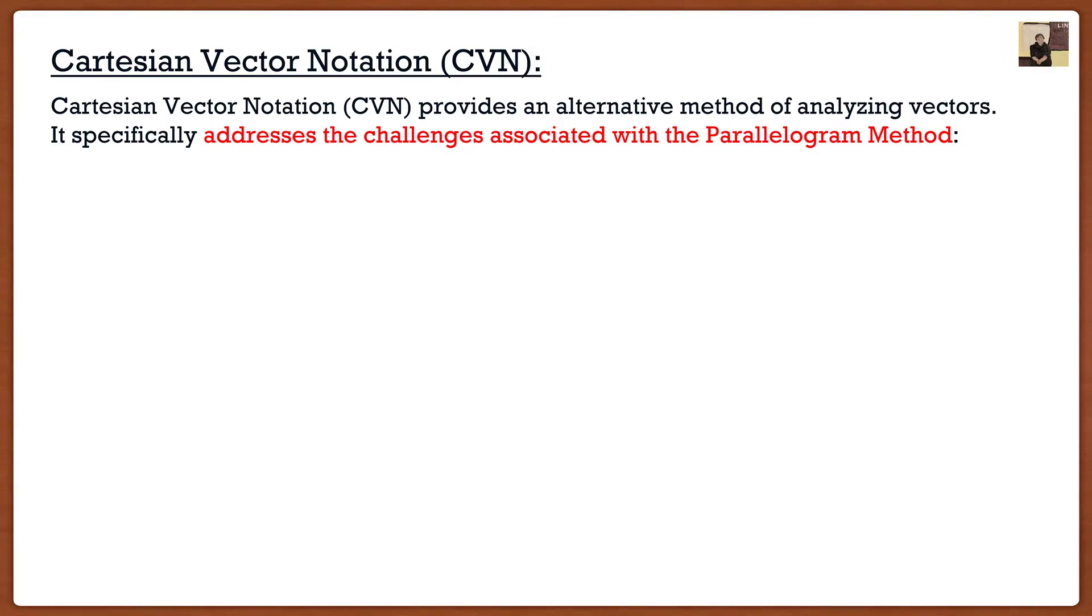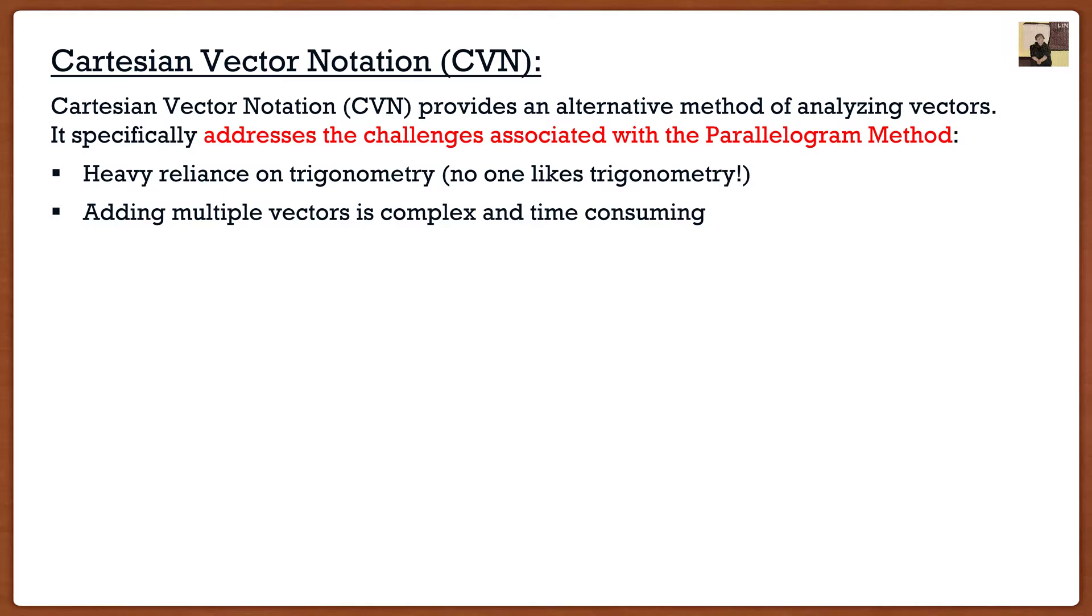Cartesian vector notation, or as a lot of people call it CVN, provides us with an alternative method of analyzing vectors. More importantly, it specifically addresses the challenges we had with the parallelogram method. Those challenges being the heavy reliance on trigonometry, and that adding multiple vectors is complex and time-consuming. Remember we said if we have three or more vectors, we have to go two vectors at a time and slowly work our way up to the number of vectors that we have.